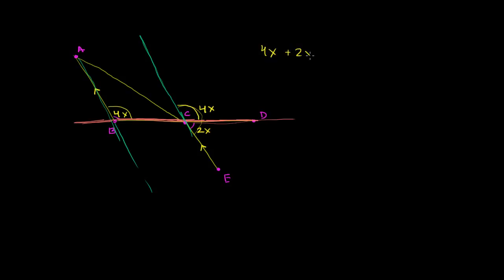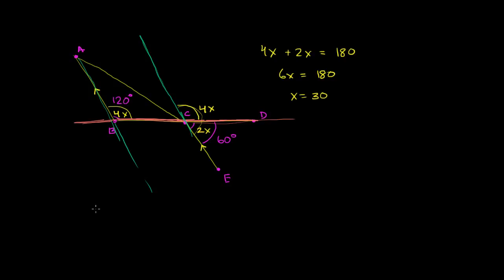So 4x plus 2x needs to be equal to 180 degrees. We get 6x is equal to 180 degrees. Divide both sides by 6 and you get x is equal to 30. This angle right over here is 2 times x, so it's going to be 60 degrees. And this angle right over here is 4 times x, so it is 120 degrees. And we're done.